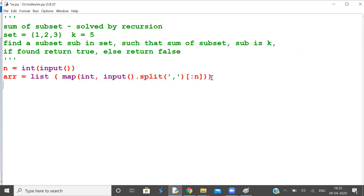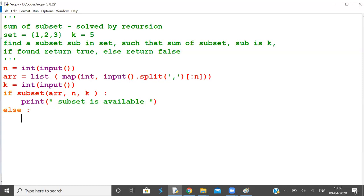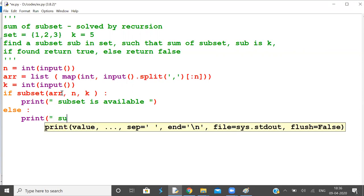Let us take only one test case. If the subset problem - inputs are array, one more input is k, the sum of subset, which is also an integer. So three lines of input. Our inputs are the array, the number of elements, and the sum. If this is true, print 'subset is available', otherwise print 'subset not available'.